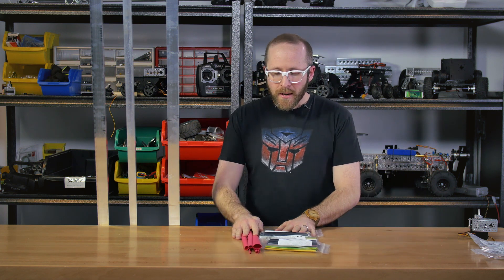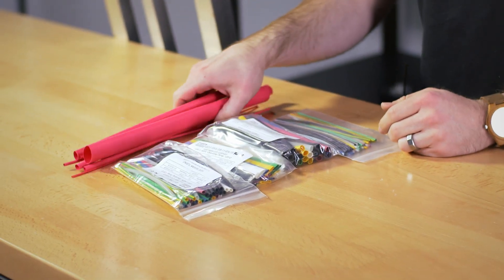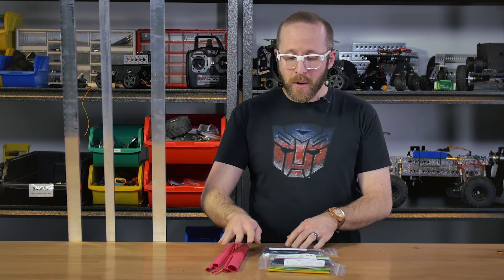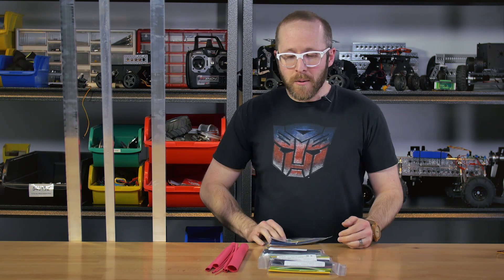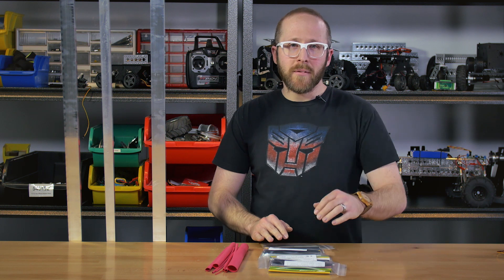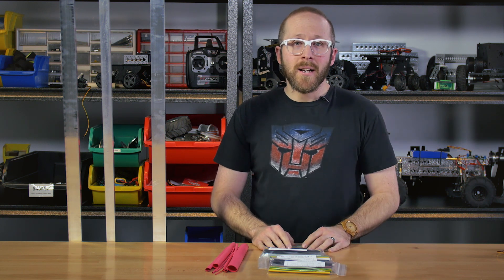Next, we have heat shrink. We used to only have black heat shrink, but now we have red as well as variety packs that will come in a variety of different colors and a variety of different sizes, including clear. So pick these up to keep your projects nice and organized.